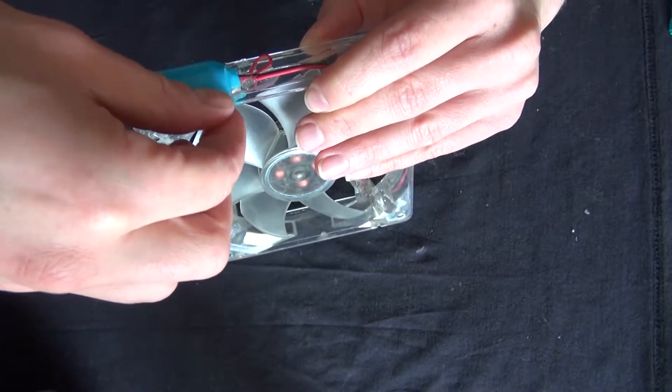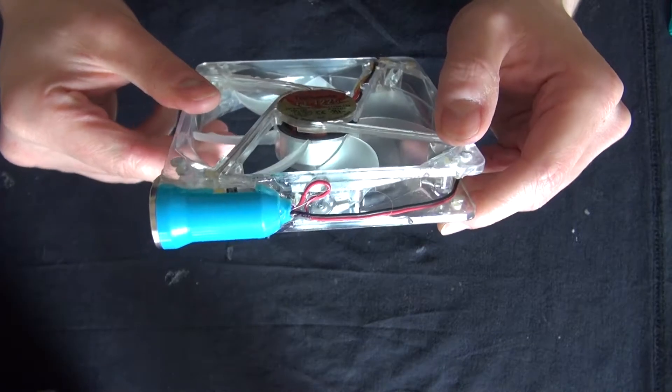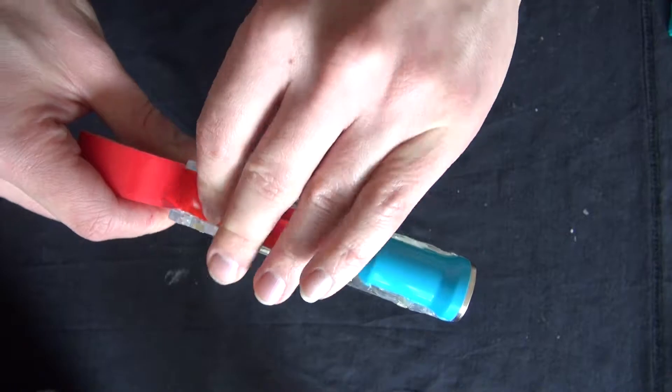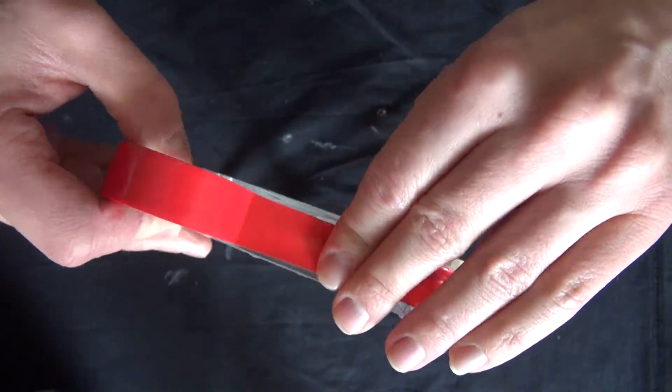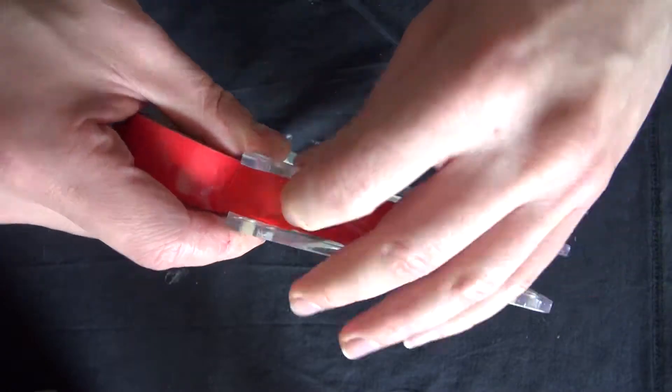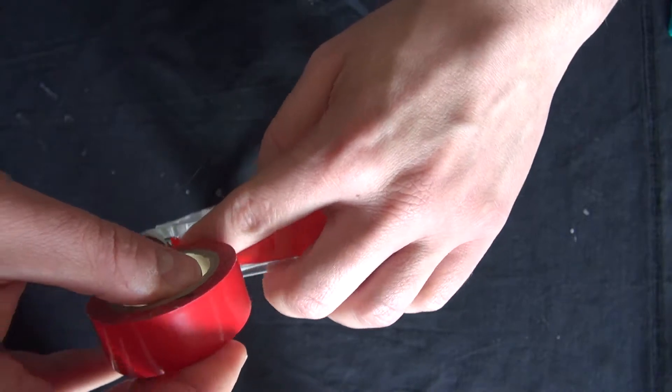Now everything's all glued into place. Now let's go ahead and use a little bit of electrical tape and hide the wires and make it look a little nicer and a little bit cleaner. Perfect.